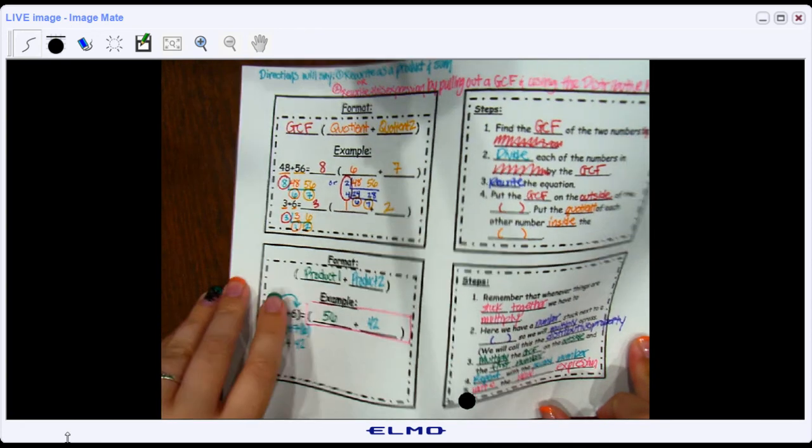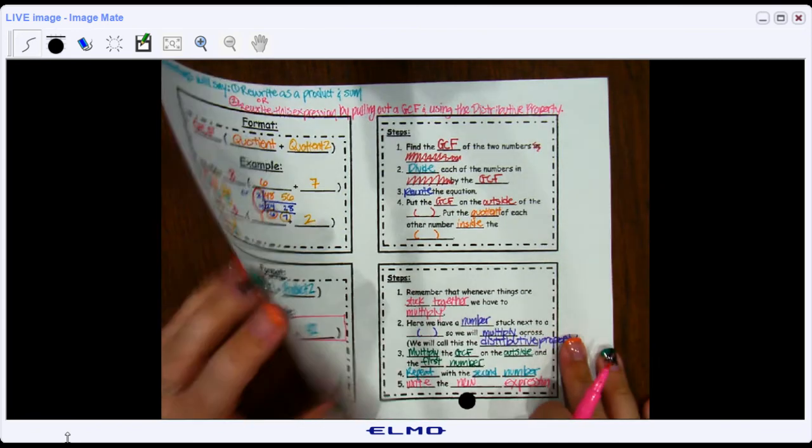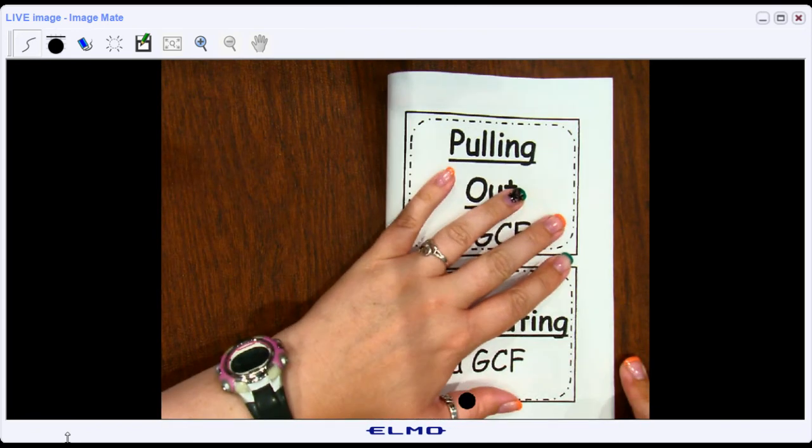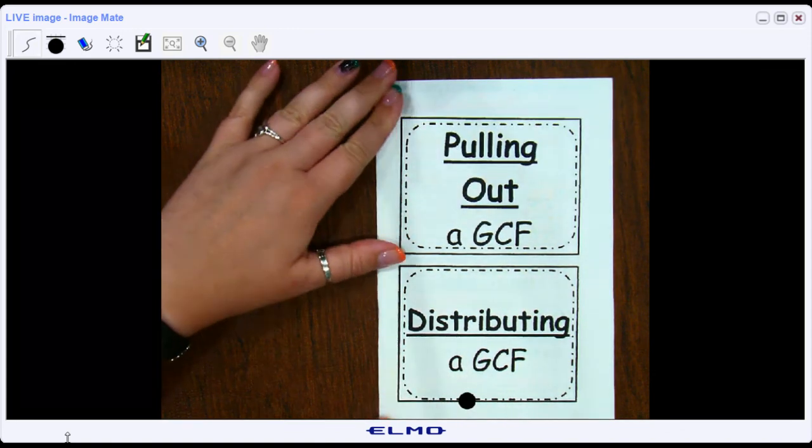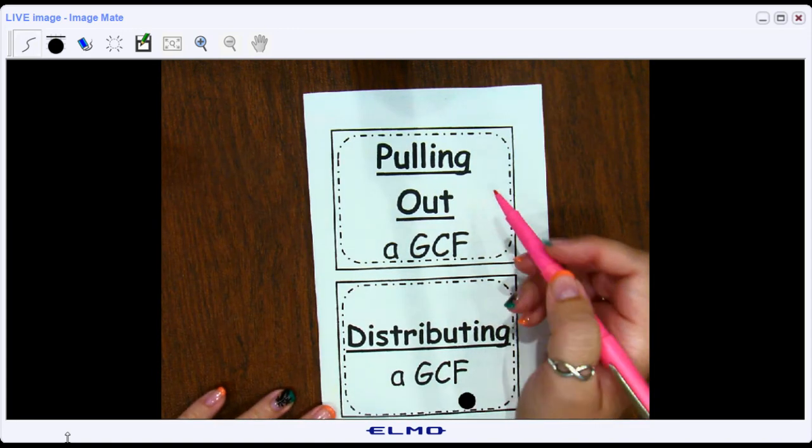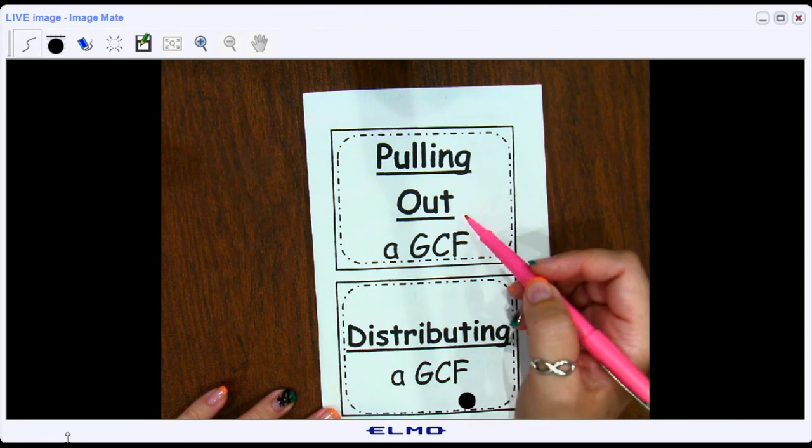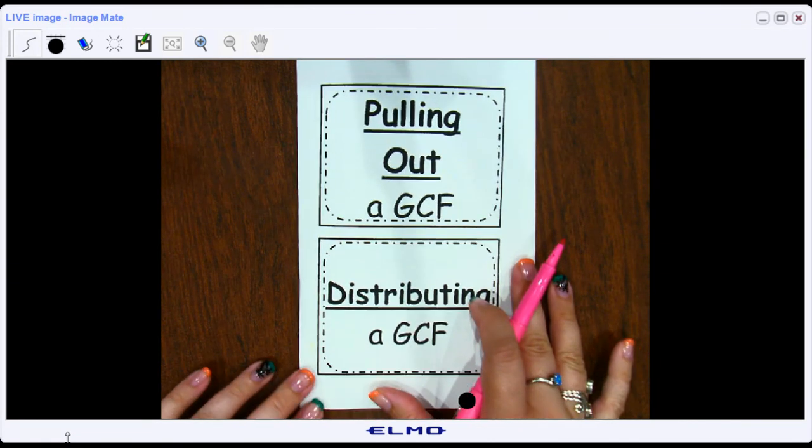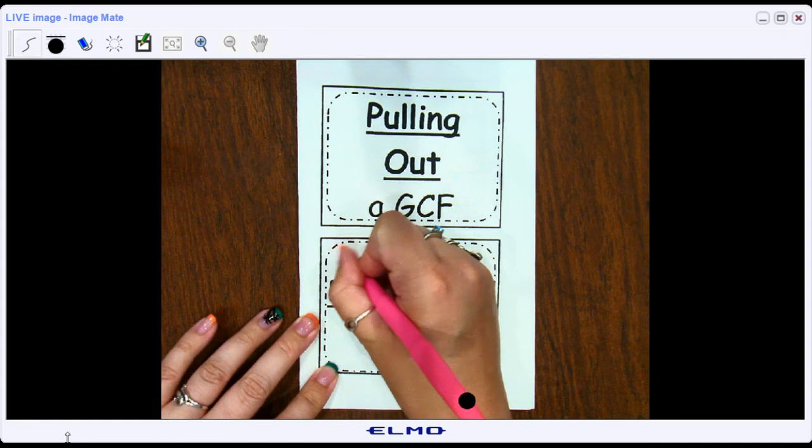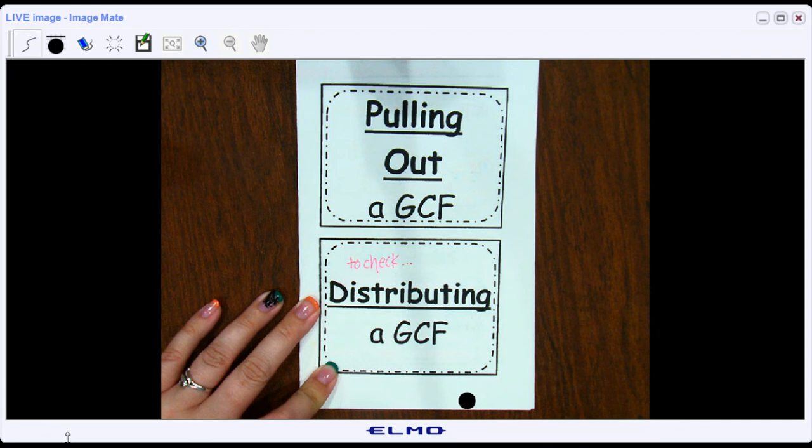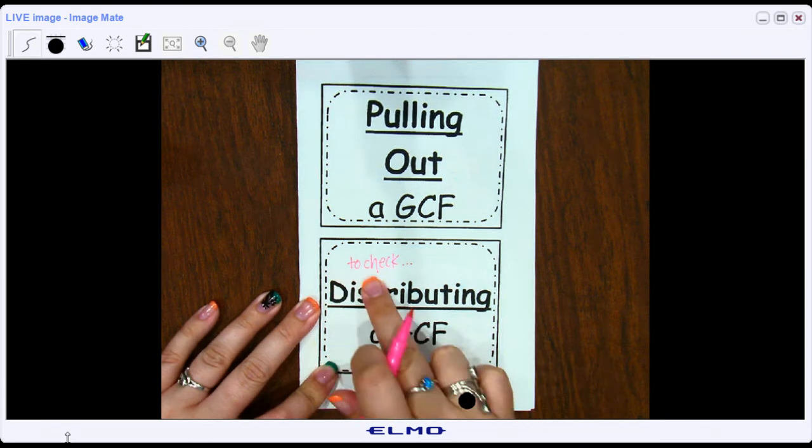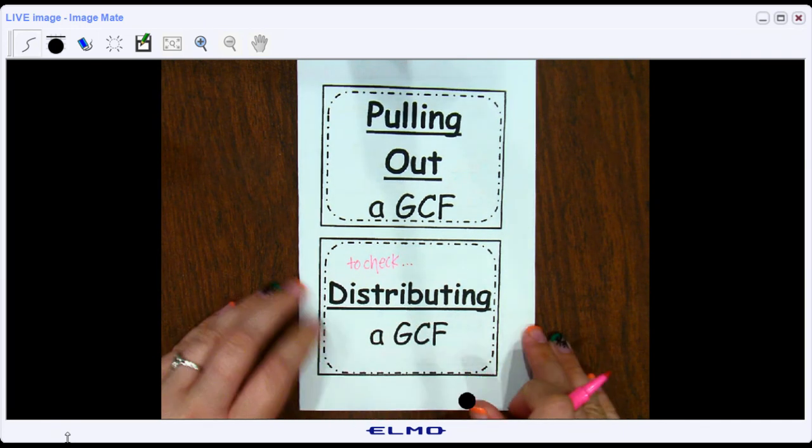So, in fact, when I go to fold this, you just fold it in half. The top part, this is what we're most likely going to be doing. We're learning how to pull out a GCF. To check if we got it right, we'll use the distributive property. So I just wrote myself a little note that that's why we do this step right here.